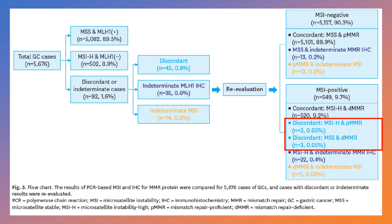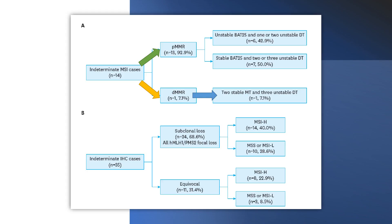Even after re-examination, 3 discordant cases were found in MSI-high and pMMR, and 3 in MSS and dMMR. Of the 14 indeterminate MSI cases re-examined, 13 were pMMR and only 1 was dMMR.